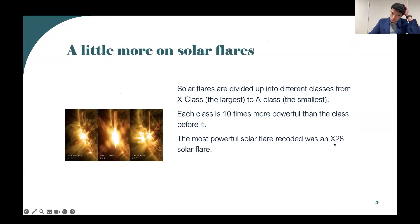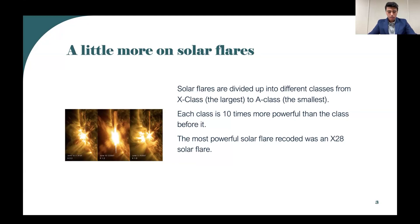Solar flares are divided up into classes — X, which is the most powerful, and A, which is the weakest. It goes from X, M, C, B, A, starting from most to least powerful. Each class is 10 times more powerful than the last. To specify it even further, after the letter there will be a number from 1 to 10, which will show how powerful it is more specifically — unless it's X class.